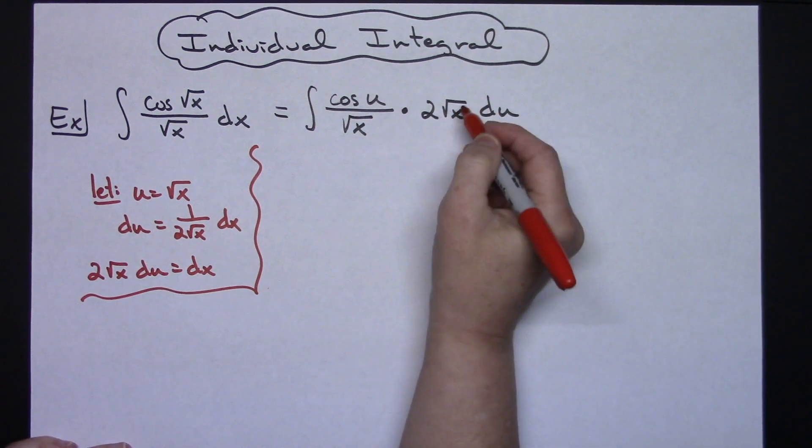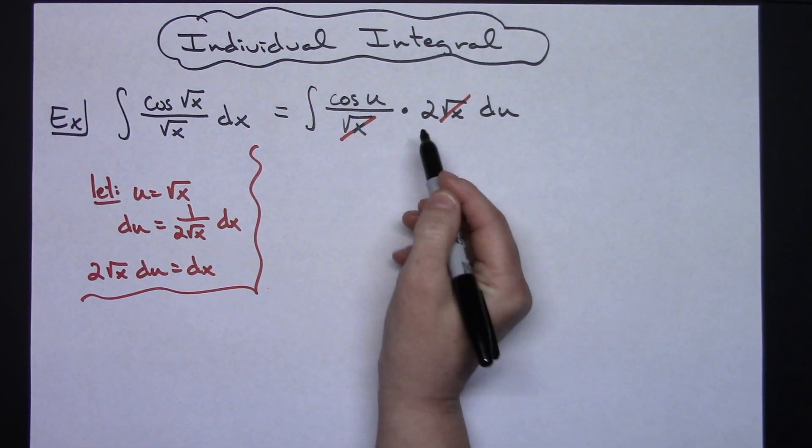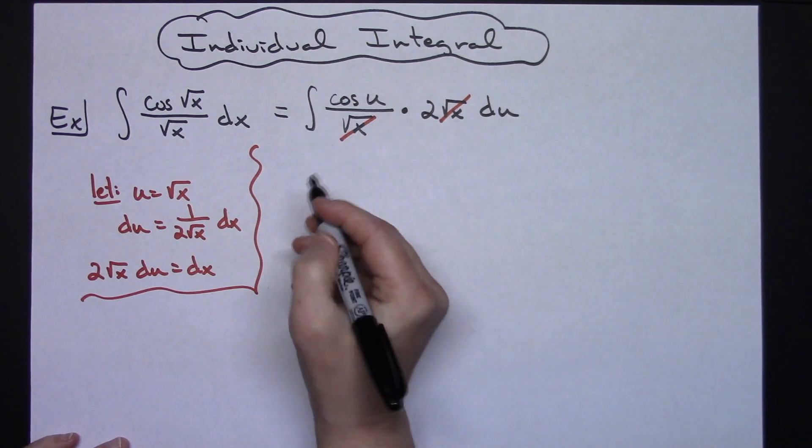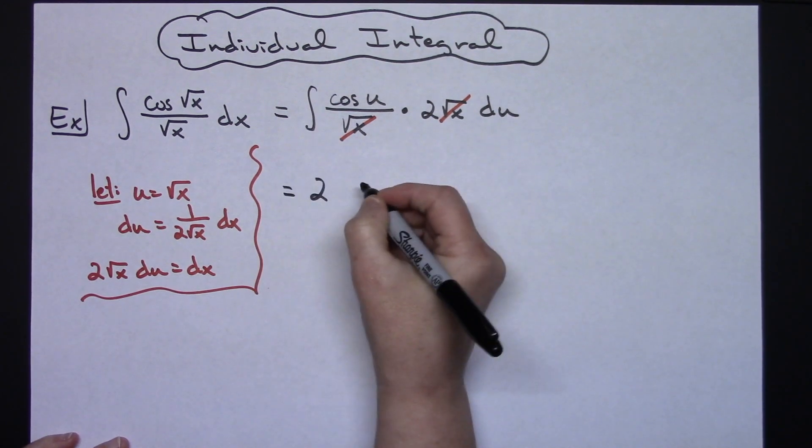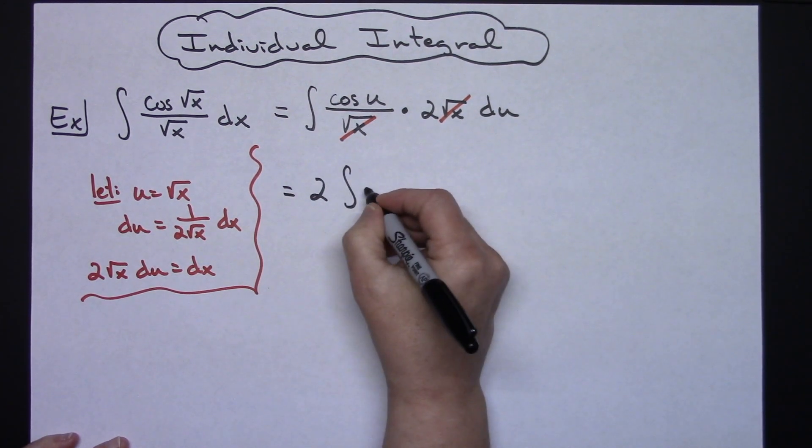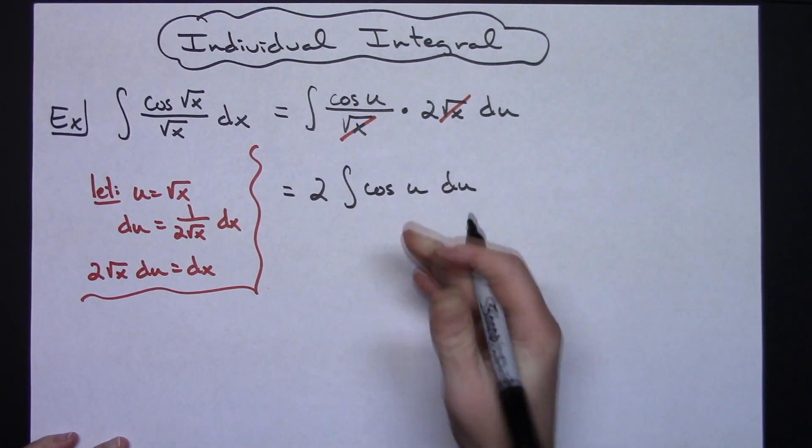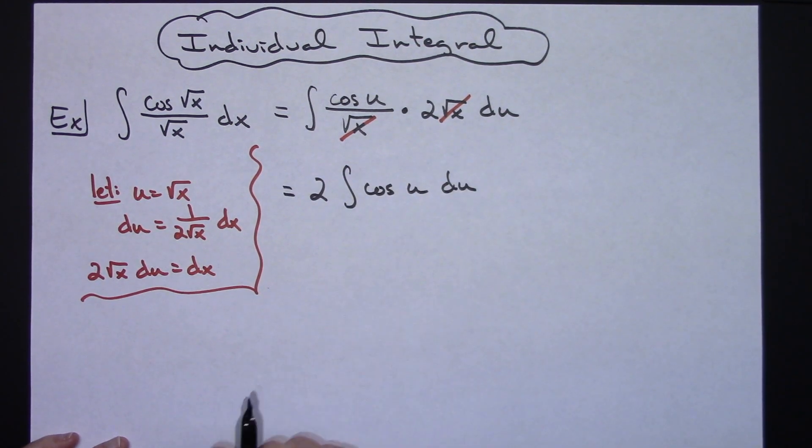So then that's going to allow me to cross out those square root of x's. That 2 then we can pull out in front, so we'll pull that out in front, and then I'm going to have the integral of a cosine u du, and at this point definitely straightforward. We can integrate cosine as being sine.